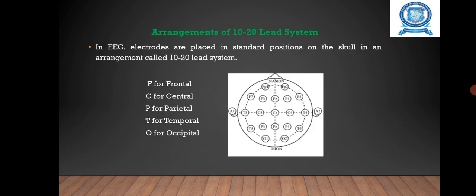Next we are going to see arrangement of the 10-20 lead system. It is placed in standard positions on the skull in an arrangement called the 10-20 lead system, devised by the International Federation of Societies of EEG. The electrodes are identified according to their position on the head: odd numbers represent left side electrodes, even numbers represent right side electrodes, and Z denotes midline electrodes.